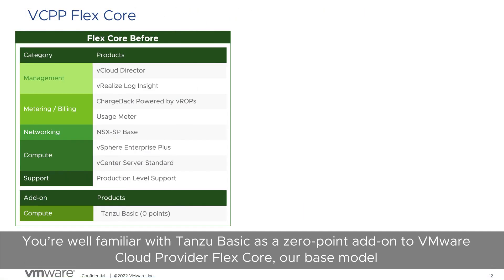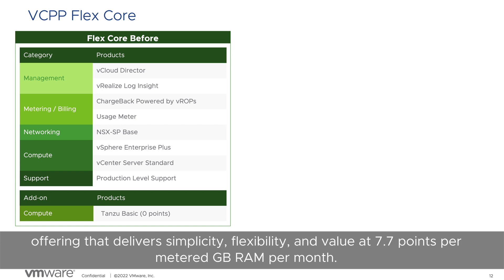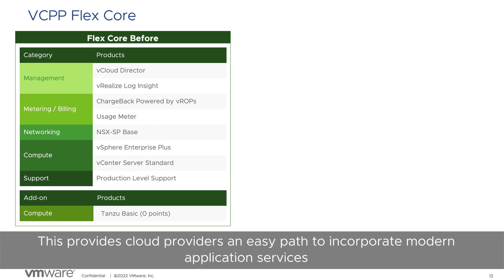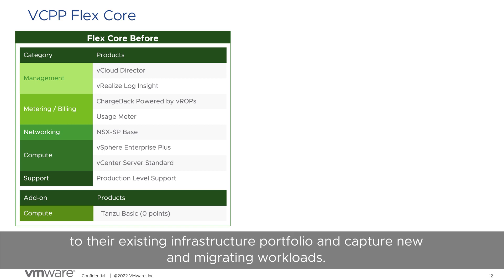You're well familiar with Tanzu Basic as a zero-point add-on to VMware cloud provider FlexCore, our base model offering that delivers simplicity, flexibility, and value at 7.7 points per metered gigabyte RAM per month. This provides cloud providers an easy path to incorporate modern application services to their existing infrastructure portfolio and capture new and migrating workloads.